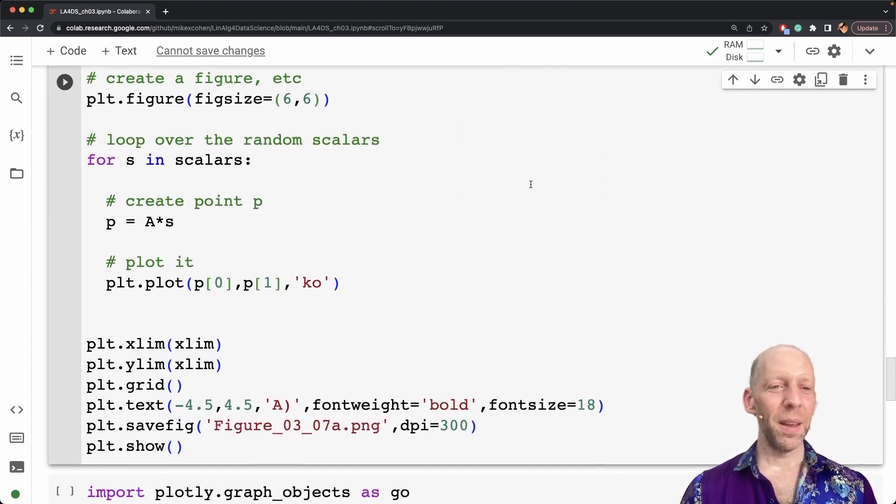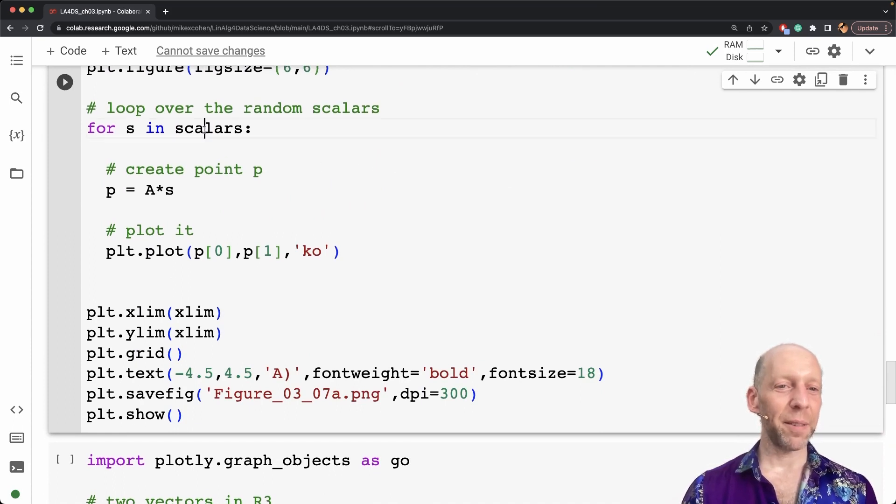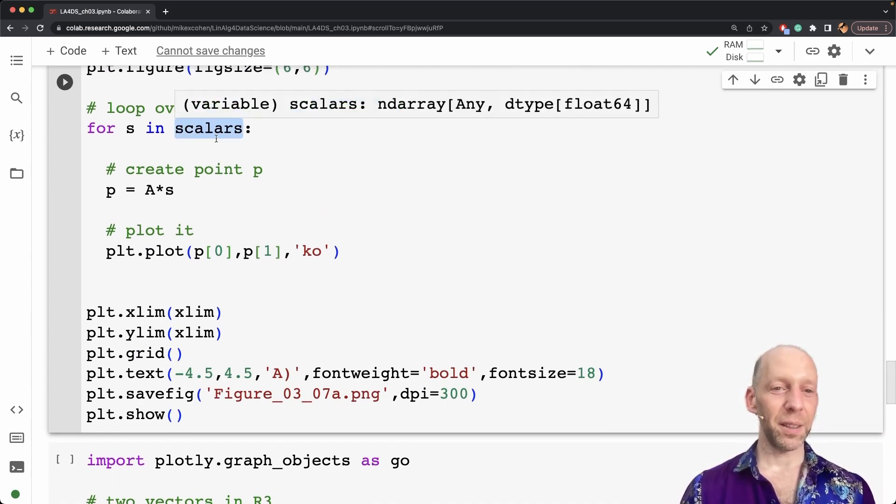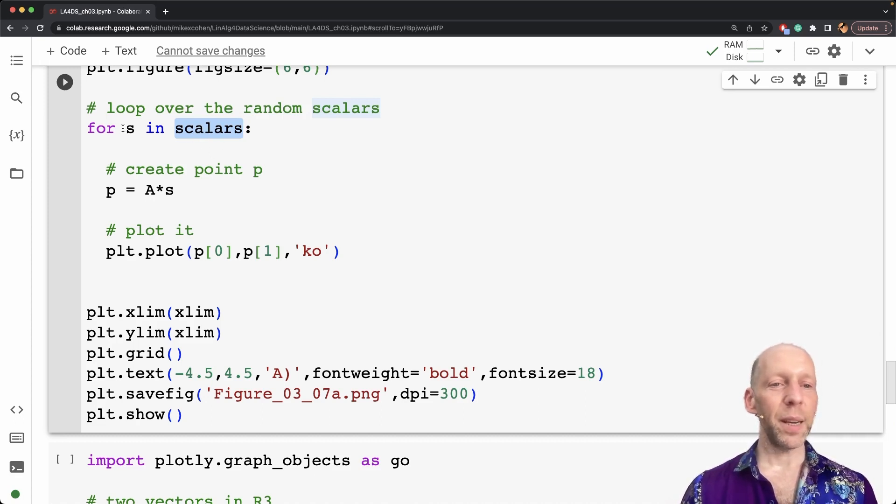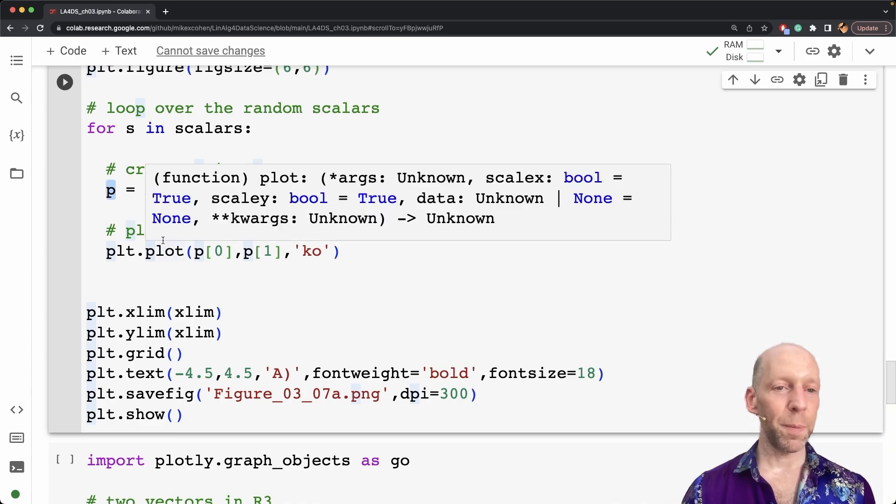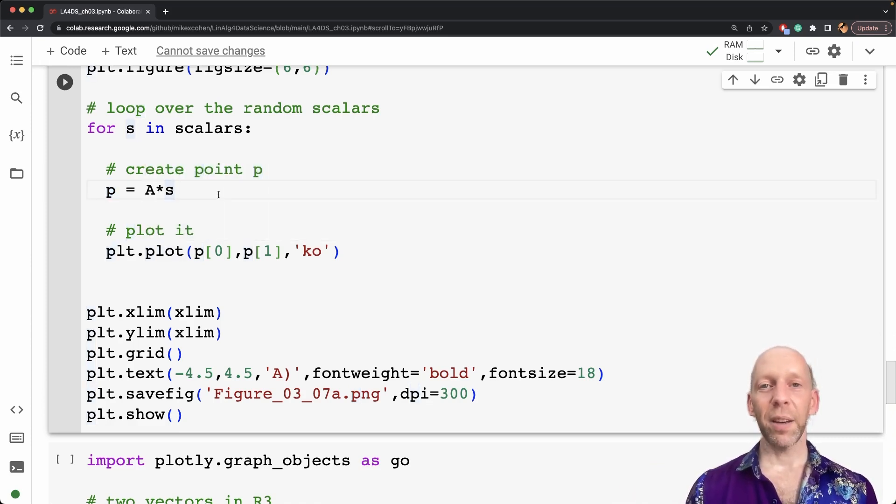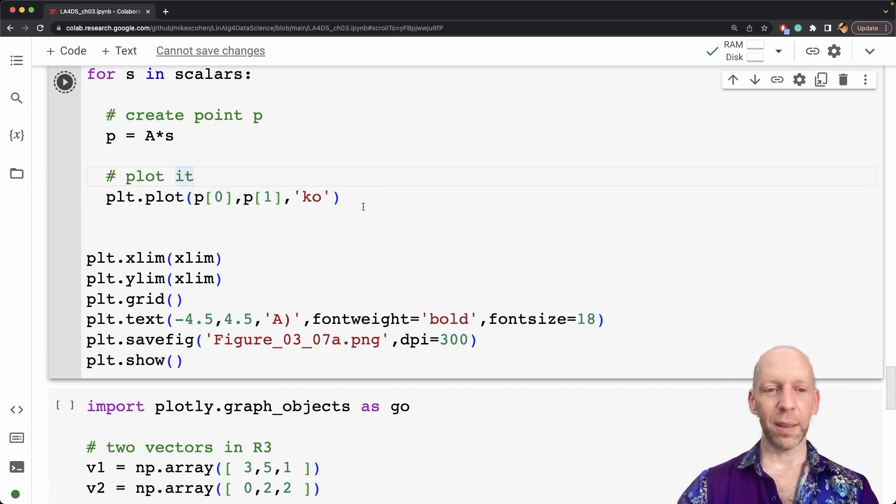So then the plotting code is fairly simple. We have our vector of scalars. So just a list of 100 scalars. And for each one of those, we create point P. You can conceptualize this as a vector, we are drawing it as a point. You could draw it as a vector as a line. But I think it doesn't make sense for this particular visualization, because obviously, all the lines are going to be overlapping. So we compute this linear weighted combination of the scalars and the vectors in set A, which is just one factor. And then we plot that as a point.